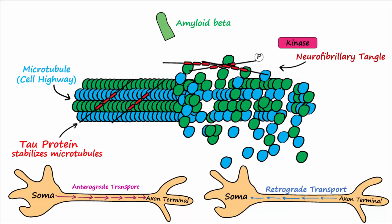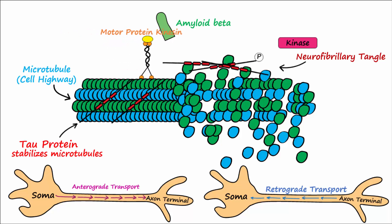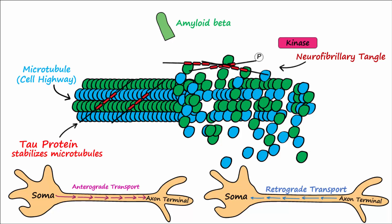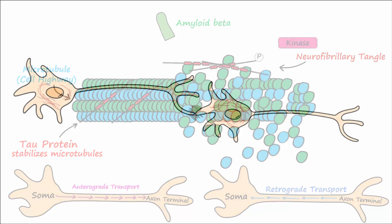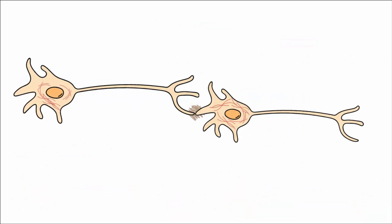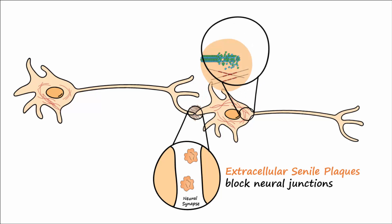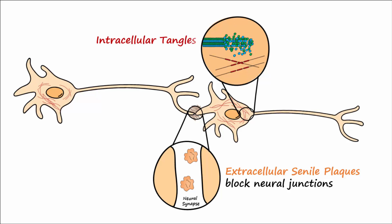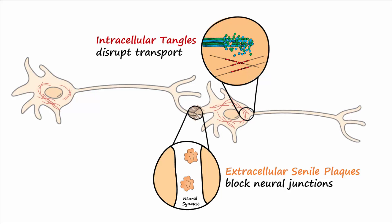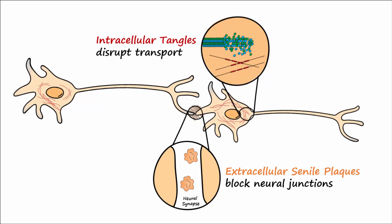Consequently, microtubules deprived of tau proteins destabilize and collapse, disabling intracellular transport. With extracellular senile plaques blocking the neural synaptic junctions and intracellular tangles disrupting transport, the neurons become dysfunctional and begin to die.